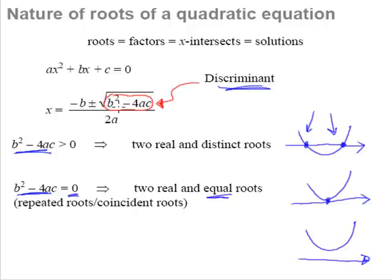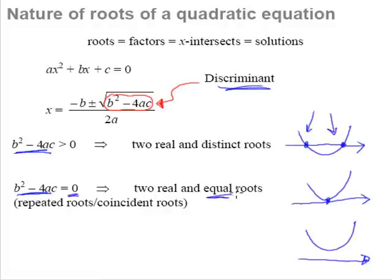When you have the square root of zero, you get zero. So when you compute negative b plus zero or negative b minus zero, there is no effect on negative b. Whether you add or subtract, you get the same x value. So there are two real roots, but they are repeated — they are equal roots.